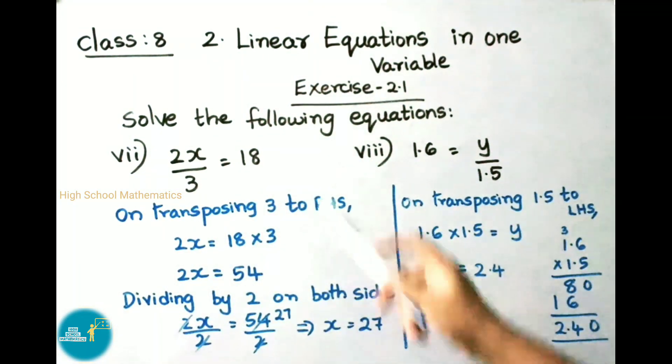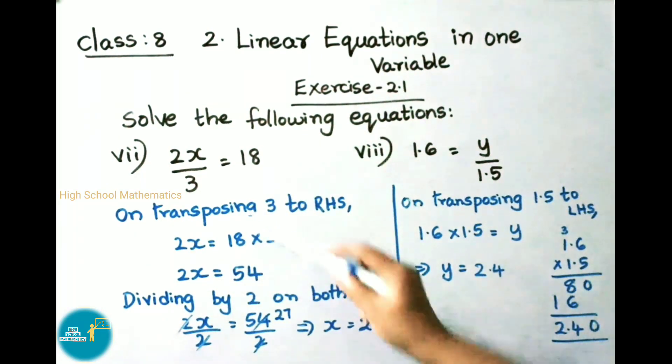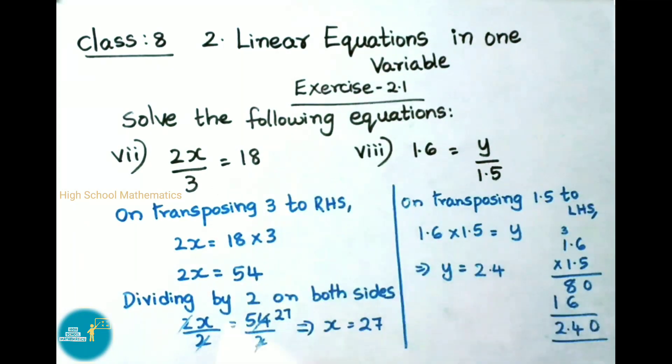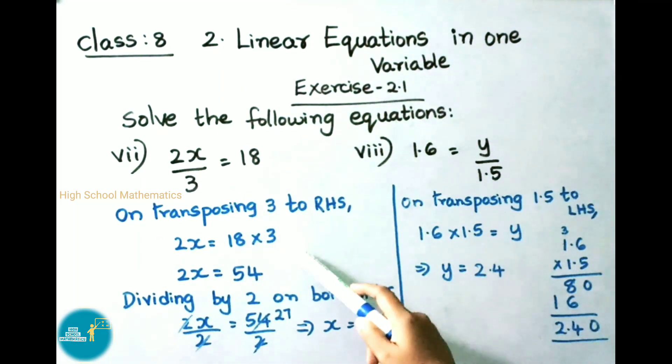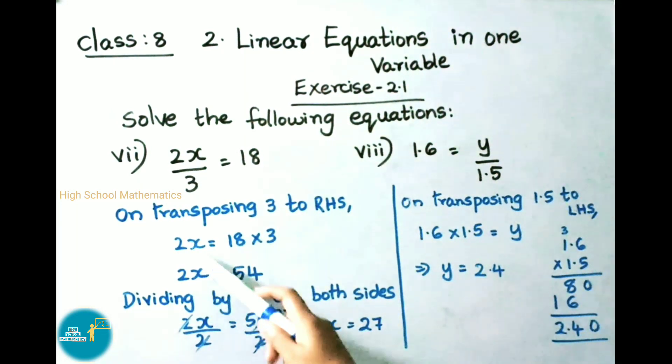The 7th sum: 2x/3 = 18. Now we have to remove this 3. For that we are transposing 3 to RHS, that is right hand side. So 2x = 18 × 3. Divided by, after transposing becomes multiply. 18 × 3 = 54. Now to remove this 2, we divide by 2 on both sides. 2x/2 = 54/2. Here 2 and 2 cancel. 2 × 27 = 54. Therefore x = 27.